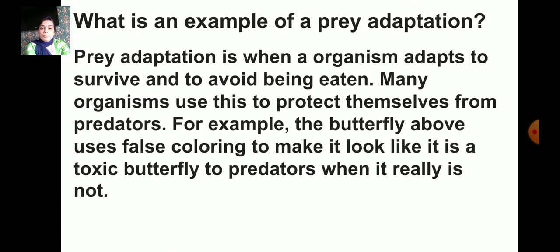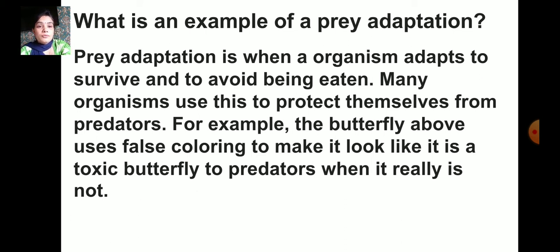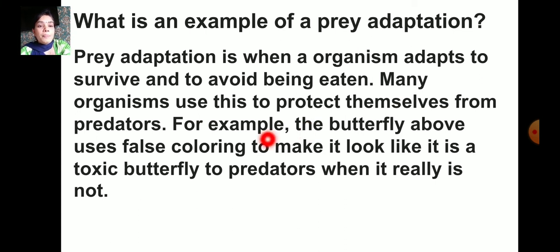What is an example of prey adaptation? Animals have different ways — the butterfly uses false coloring, while stick insects, chameleons, and polar bears look like their surroundings. Prey adaptation is when an organism adapts to survive and avoid being eaten. For example, a butterfly uses false coloring to make it look like a toxic butterfly to predators when it is really not.